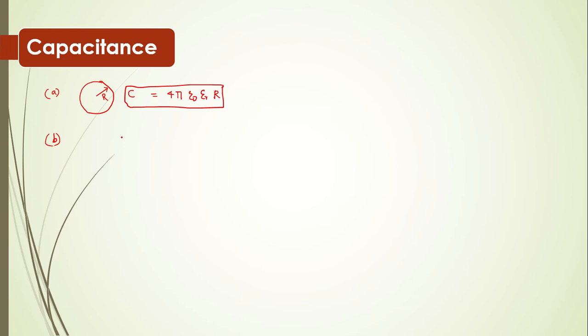For a spherical capacitor with two concentric surfaces where the inner radius is R₁ and outer radius is R₂, the capacitance formula is equal to 4π ε₀ εᵣ times R₁R₂ divided by R₂ minus R₁. This is the main equation.